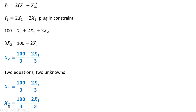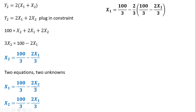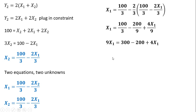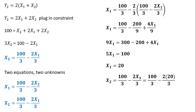We substitute 100/3 minus 2x subscript 1 divided by 3 in for x subscript 2 and solve for x subscript 1, multiplying everything through by 9. With private provision, consumer 1 would buy 20 fireworks. Taking that result and plugging it into the equation for person 2, person 2 would also buy 20 fireworks. Taken together, the total provision of this public good would be 40, which is less than the socially optimal provision of 66.7.